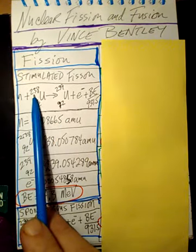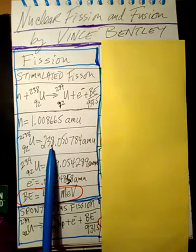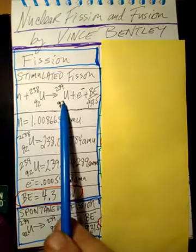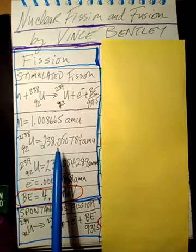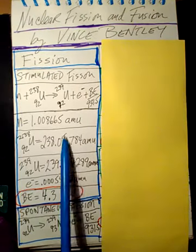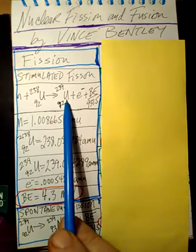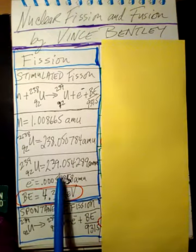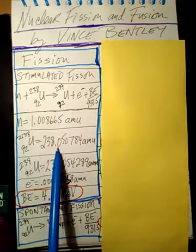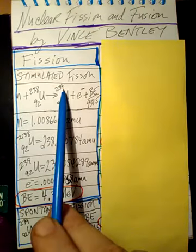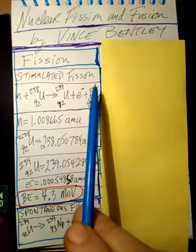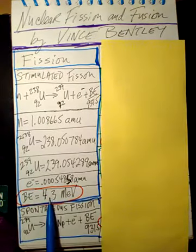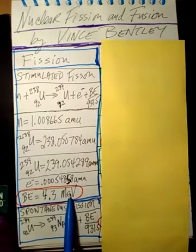The uranium-238 atomic mass in AMUs is this number, and the uranium-239 isotope will be a little bit bigger, as you can notice. We also need the electron mass in atomic mass units. Plugging all these numbers in — the neutron mass, the uranium masses, and the electron mass — we have only one unknown: the binding energy. Solving algebraically, we get a binding energy of 4.3 mega electron volts.